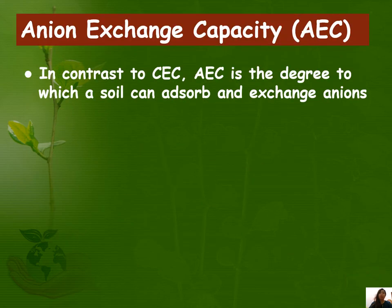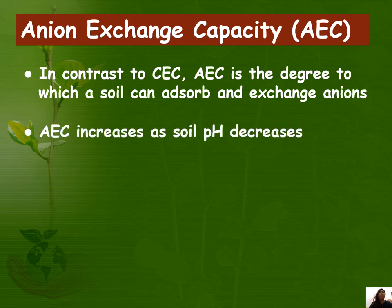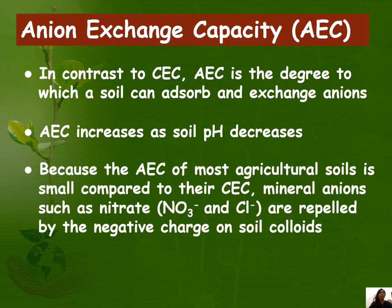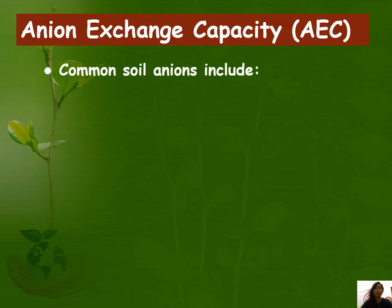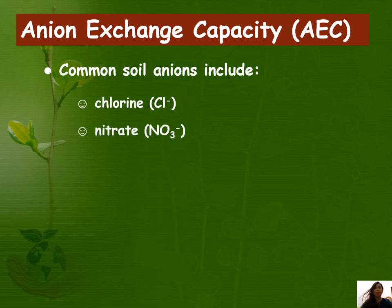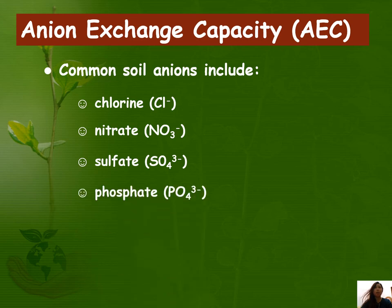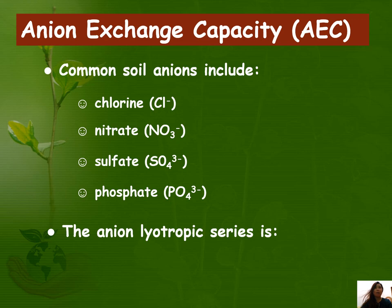In contrast to CEC, we also have AEC — anion exchange capacity — which is the degree to which a soil can adsorb and exchange anions. AEC increases as soil pH decreases. Because the AEC of most agricultural soils is small compared to their CEC, mineral anions such as nitrate and chloride are repelled by the negative charge on soil colloids. These ions remain mobile in the soil solution and are thus susceptible to leaching. The common anions in soil are chloride (Cl⁻), carbonate (CO₃²⁻), nitrate (NO₃⁻), sulfate (SO₄²⁻), and phosphate (PO₄³⁻).